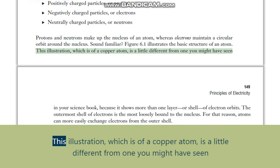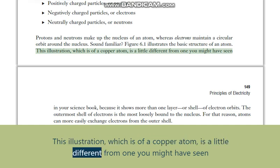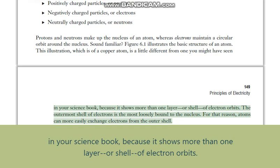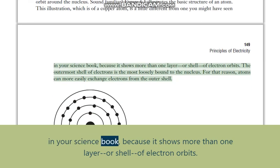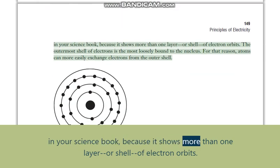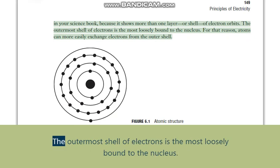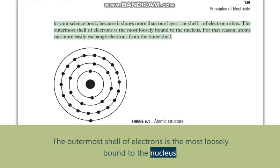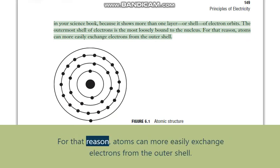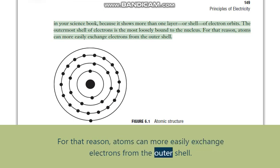This illustration, which is of a copper atom, is a little different from one you might have seen in your science book because it shows more than one layer or shell of electron orbits. The outermost shell of electrons is the most loosely bound to the nucleus. For that reason, atoms can more easily exchange electrons from the outer shell.